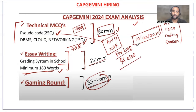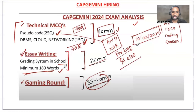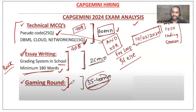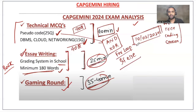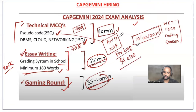Based on our 2024 analysis: Technical MCQ includes pseudo code — 25 questions; DBMS, cloud, and networking — 15 questions. That's 40 questions in 40 minutes. For essay writing in 2024, they asked about the grading system in a school, with a minimum of 180 words required and negative marking. The gaming round is 35–40 minutes, and the essay is 25 minutes. Major questions in pseudo code included topics like XOR operations and similar logic.